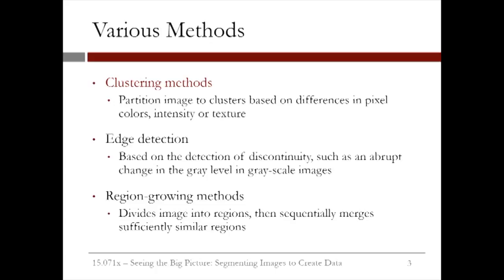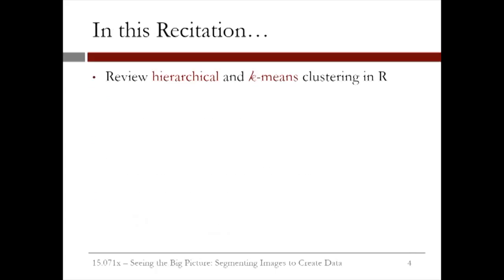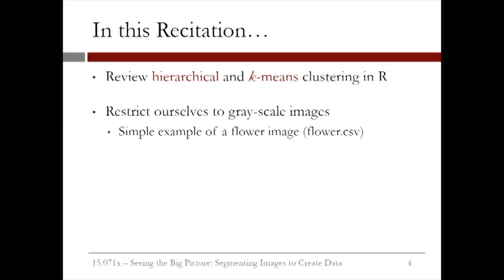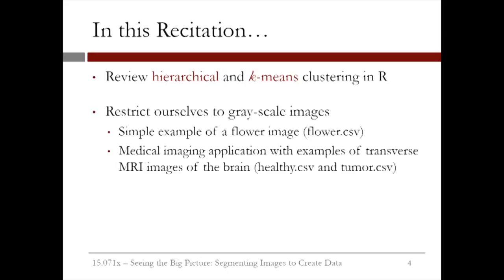In this recitation, our focus is on clustering methods. In particular, we will review hierarchical and k-means clustering techniques and how to use them in R. We will restrict ourselves to grayscale images. Our first example is a low-resolution flower image whose pixel intensity information is given in the dataset flower.csv. Our second and major example involves T2-weighted MRI images of the brain — one image corresponds to a healthy patient and the other to a patient with a tumor called oligodendrolioma. The pixel intensity information of these two images are given in the datasets healthy.csv and tumor.csv.